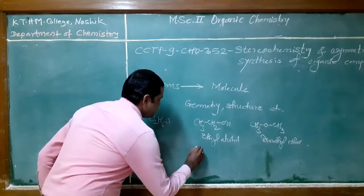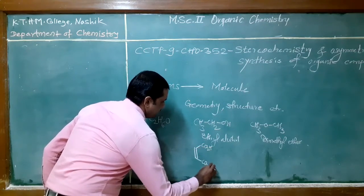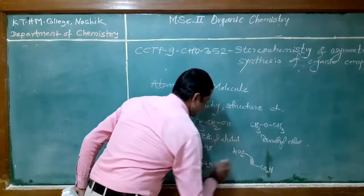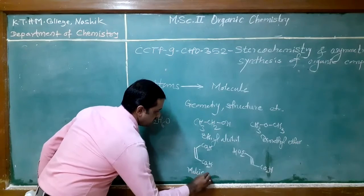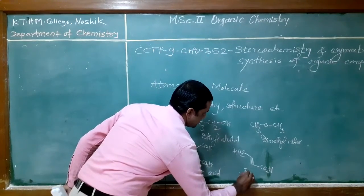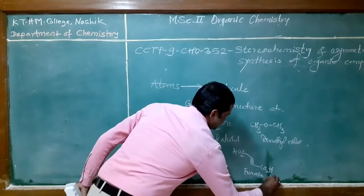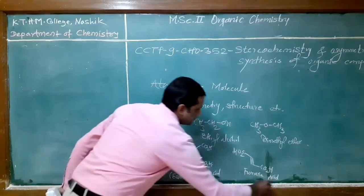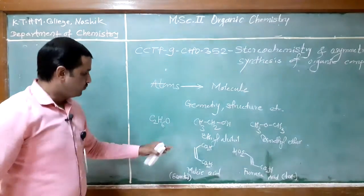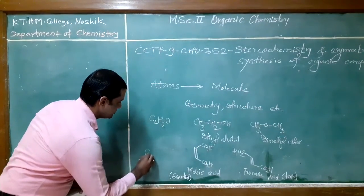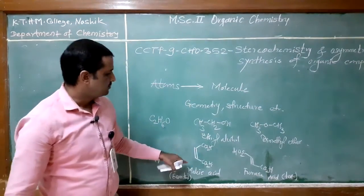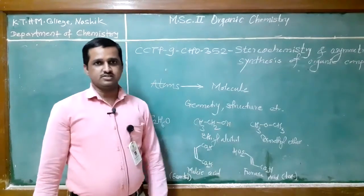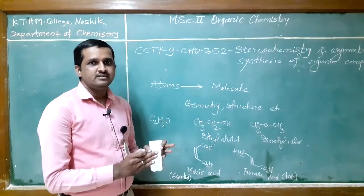Another example: consider maleic acid and fumaric acid. Maleic acid is essential to plants and animals, but fumaric acid is toxic to plants. Both compounds have the same molecular formula, C4H4O4, but two different structures — one is maleic acid, another is fumaric acid; one is essential, another is toxic. So, structure and geometry determine the properties.